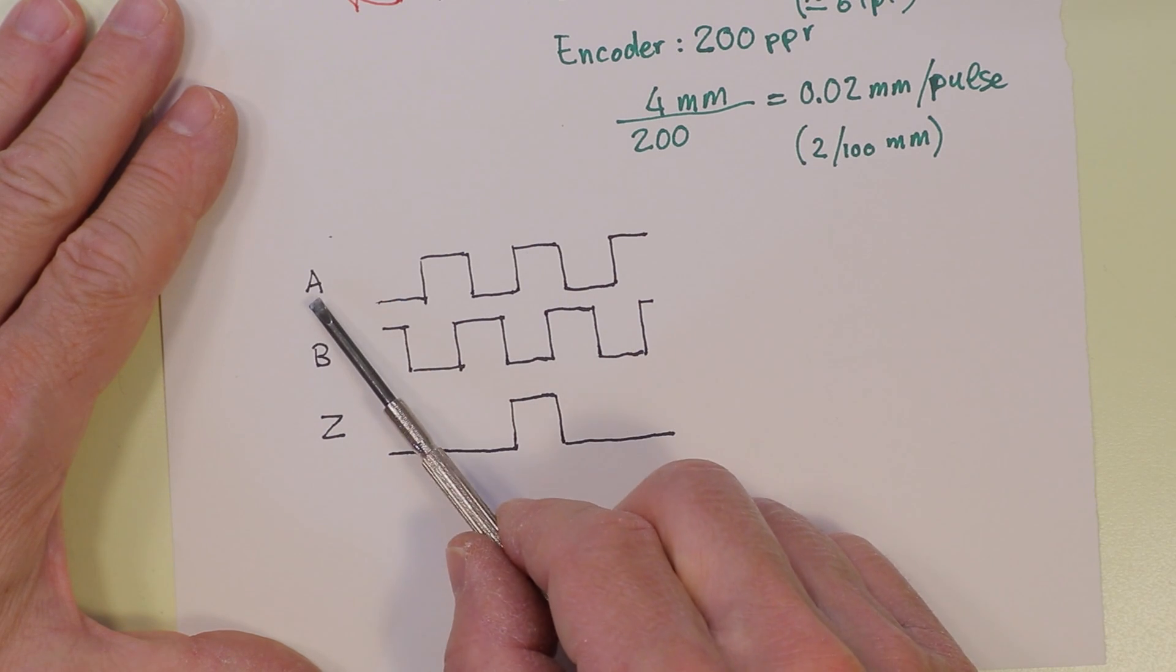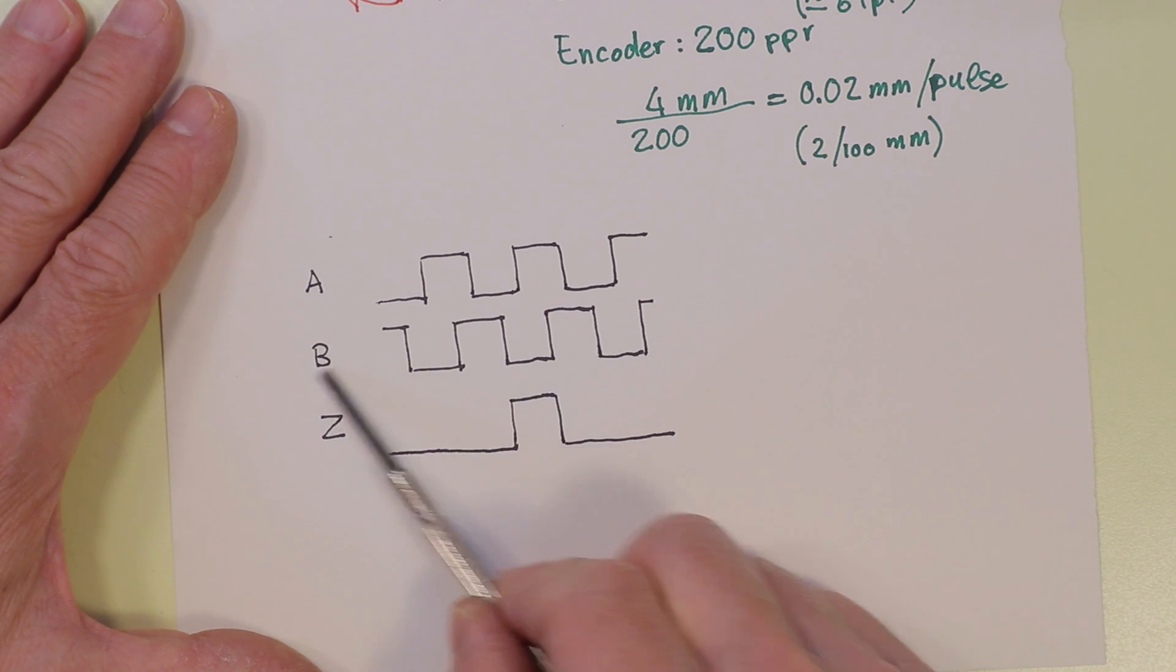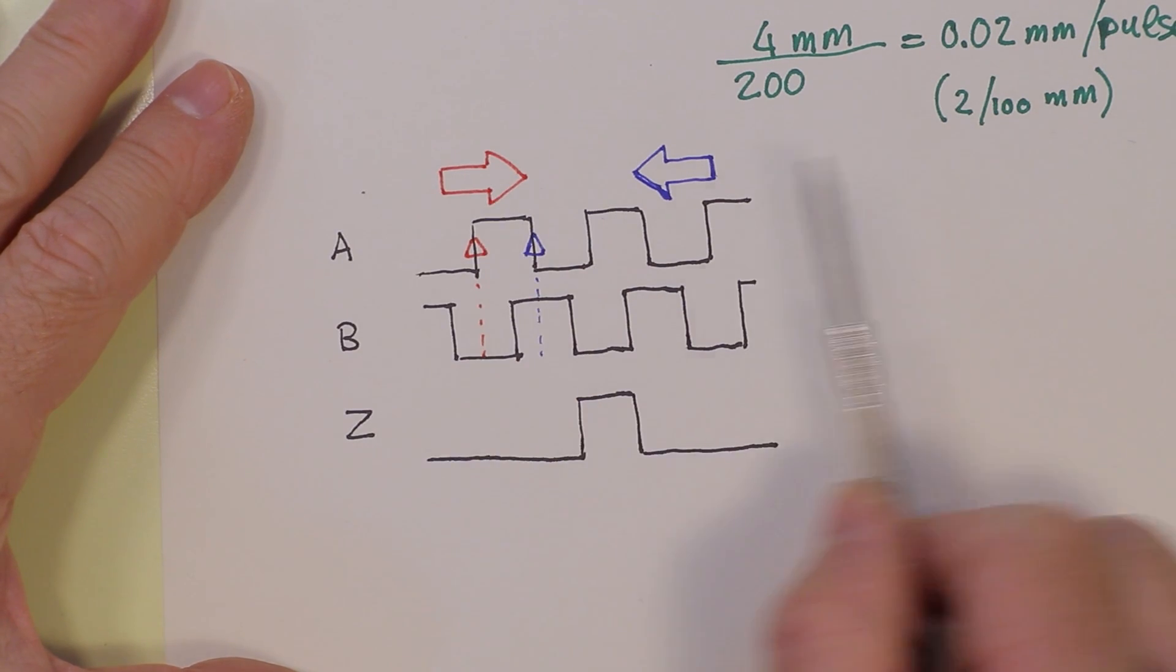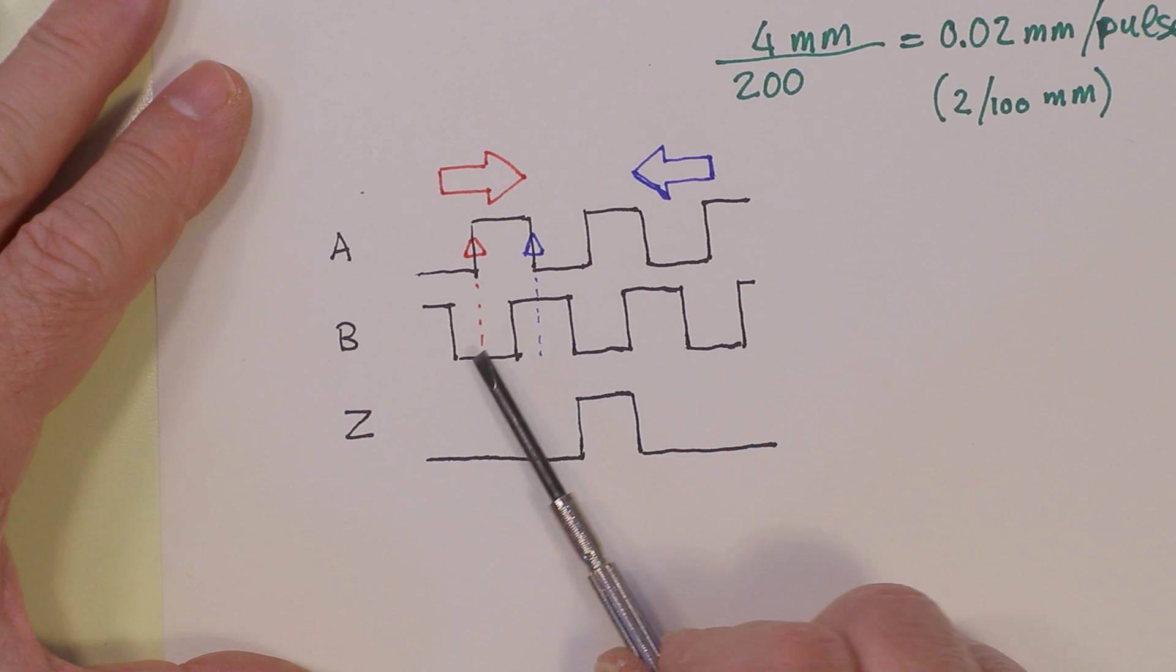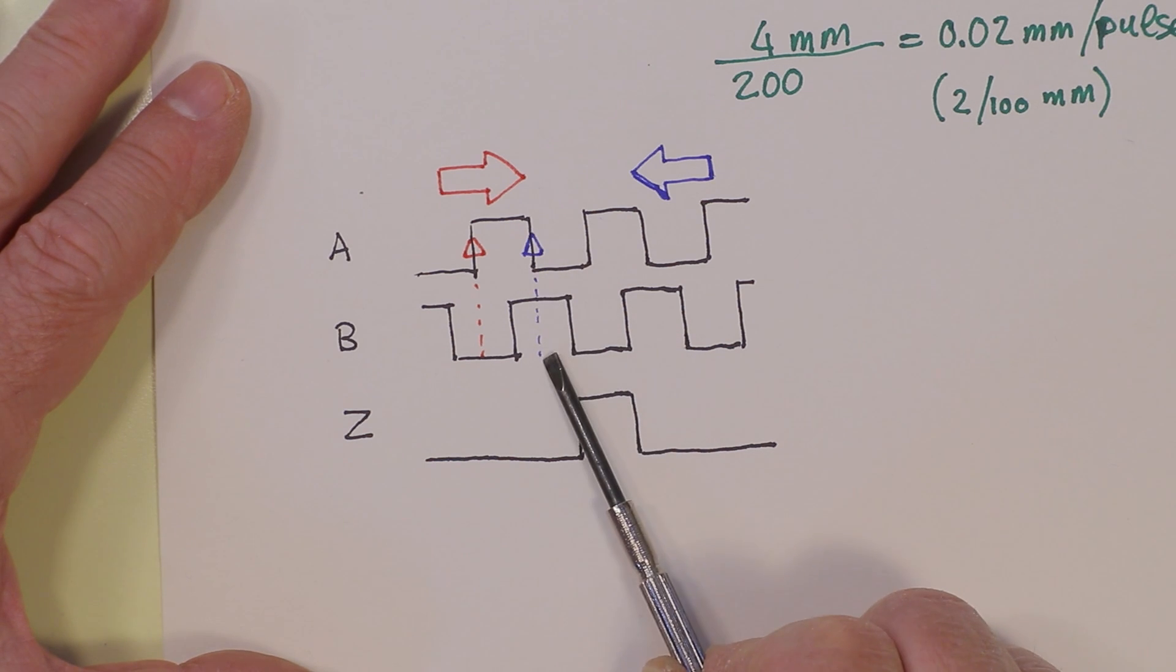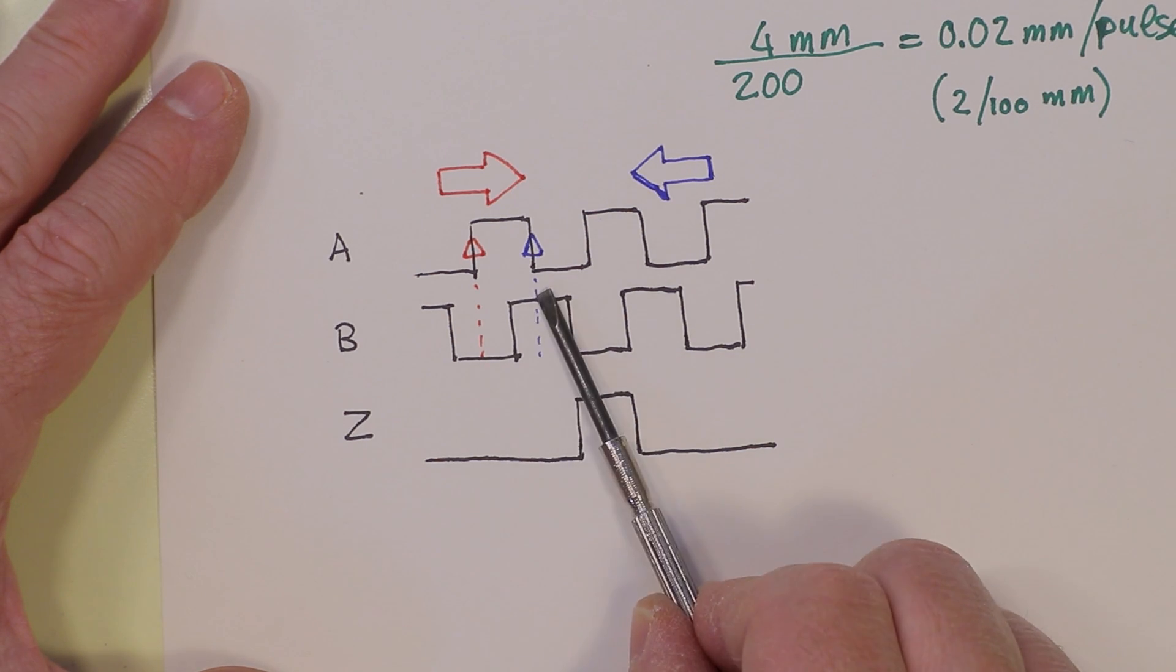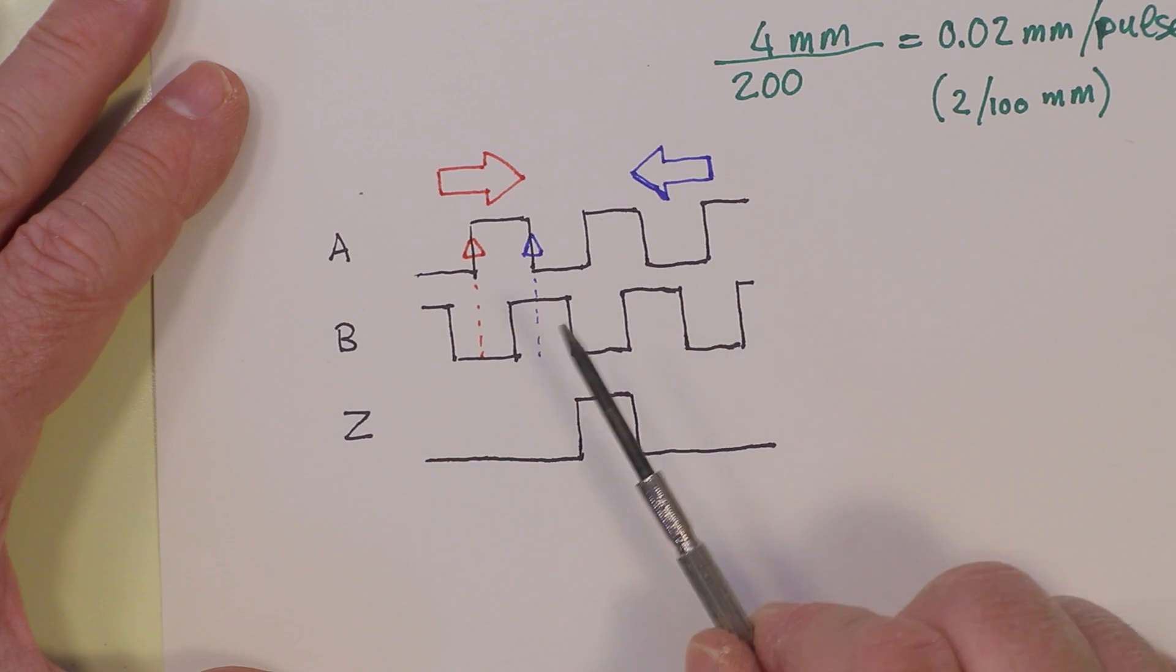The signals that come from the encoder in a typical encoder with three channels A, B, and Z: A provides the number of pulses, B provides the information of the direction, and Z provides the information of the zero point across one whole revolution. If we move in one direction, we see the pulse in A will rise when the pulse in B is zero. But if we move in the opposite direction, we can see the pulse in A will rise when the pulse in B is high. So discriminating between this condition, if this is high or low, we can understand if we are moving in one direction or in the opposite direction.